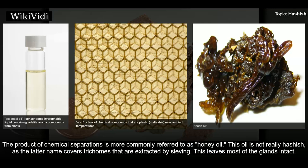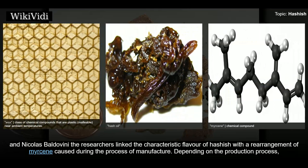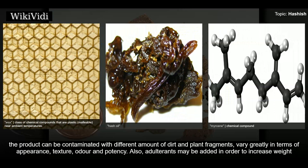After chemical separation, remaining plant materials are filtered out and the solvent is evaporated or boiled off, leaving behind the desirable resins called honey oil, hash oil, or simply oil. Honey oil still contains waxes and essential oils and can be further purified by vacuum distillation to yield red oil. A 2014 study linked the characteristic flavor of hashish with a rearrangement of myrcene caused during manufacture. Depending on the production process, the product can be contaminated with dirt and plant fragments, and adulterants may be added to increase weight or modify appearance.